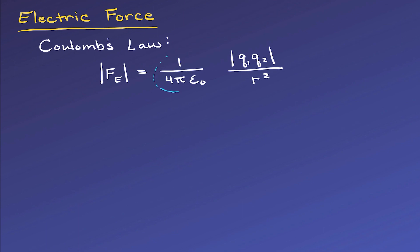The 1 over 4 pi epsilon-naught out front is just a number. The epsilon-naught is called the permittivity of free space or the vacuum, and it's a constant equal to 8.854 times 10 to the minus 12 Coulomb squared per Newton meter squared.